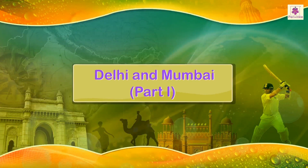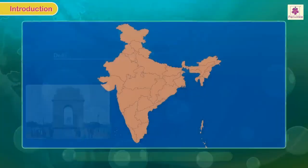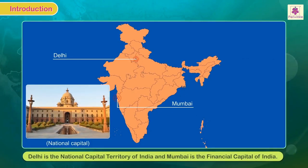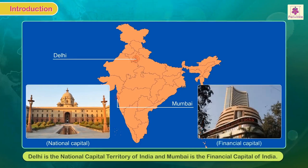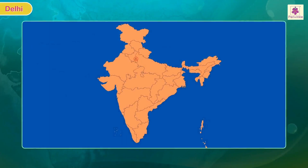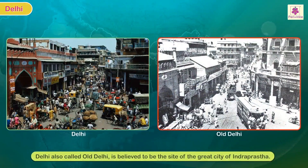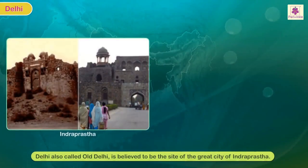Delhi and Mumbai are two major metro cities of India, the former being the national capital of India and the latter the financial capital. Delhi, along with New Delhi, forms the national capital territory, that is NCT of Delhi. Delhi, also called Old Delhi, is believed to be the site of the great city of Indraprastha, built by the Pandavas.